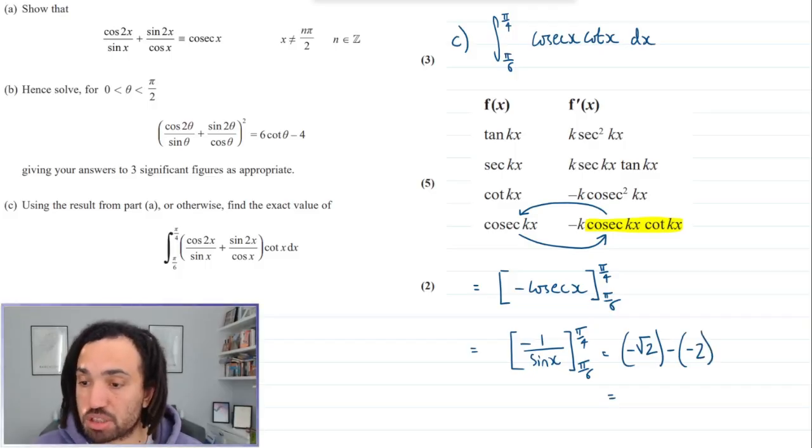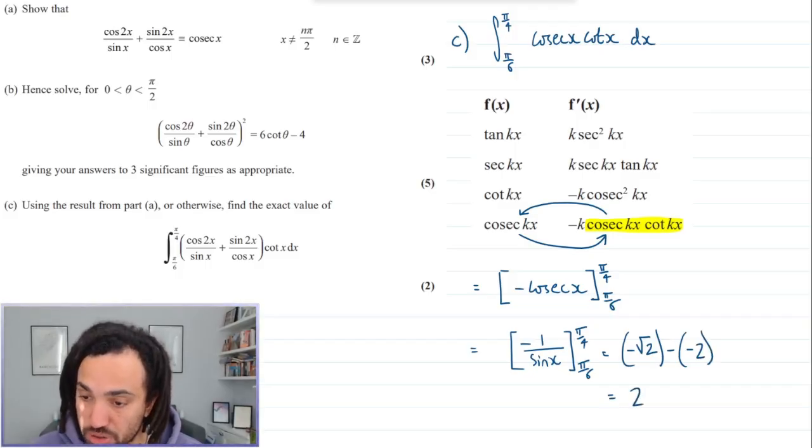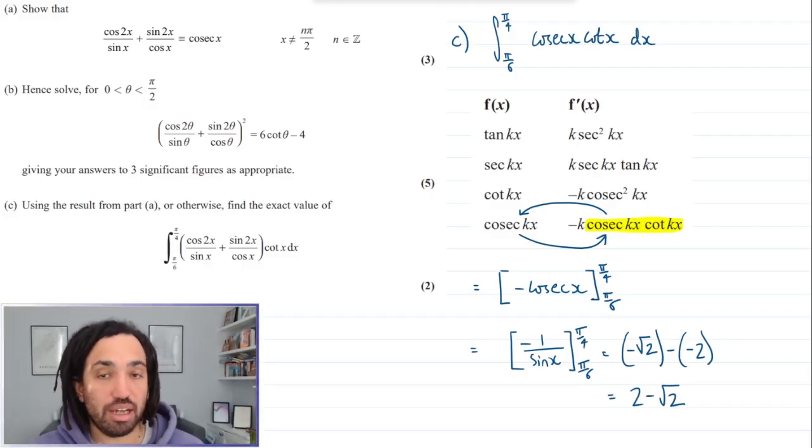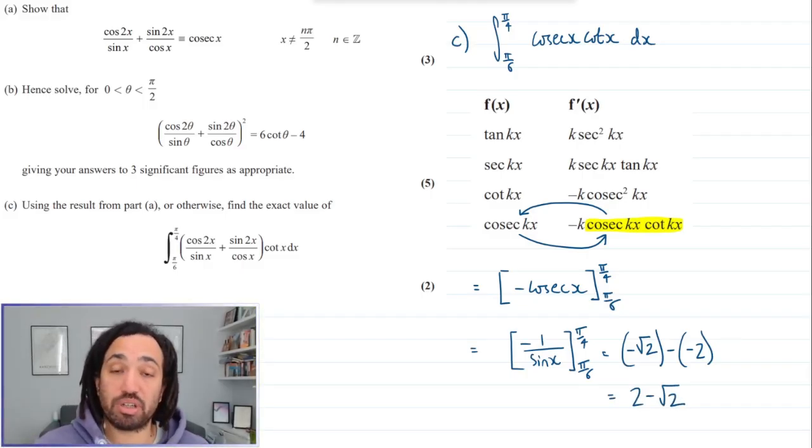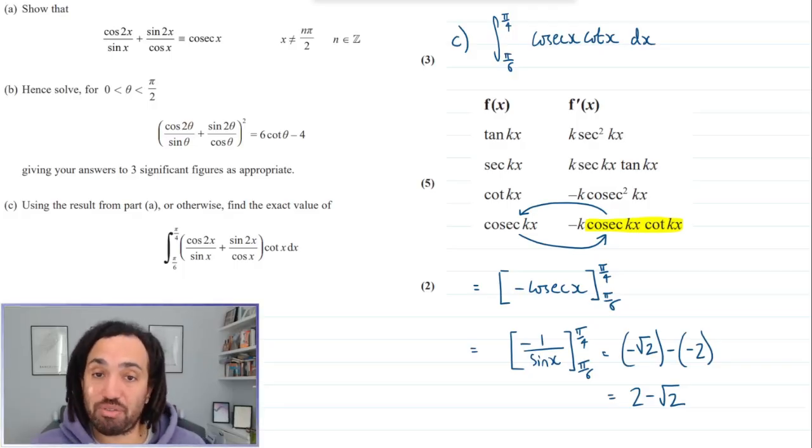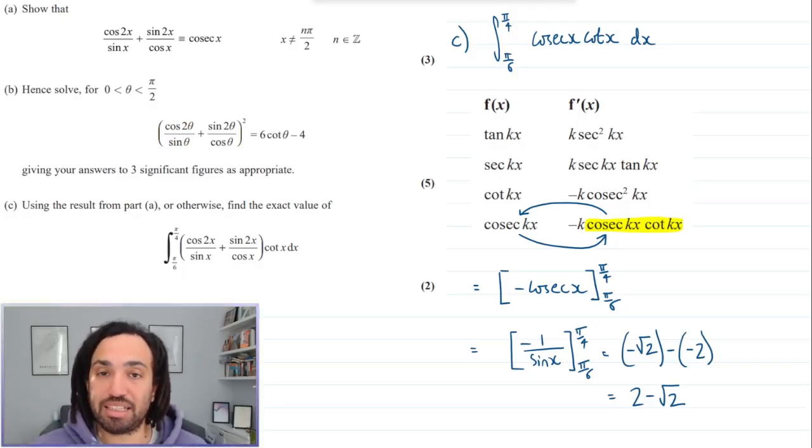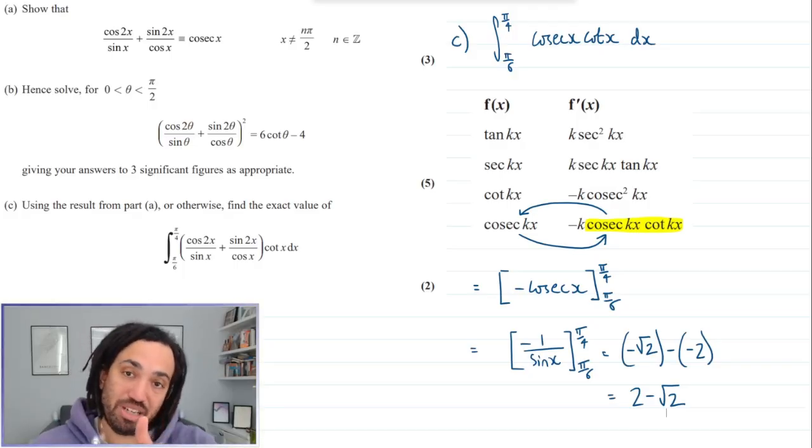So my final answer will be we have a positive 2 minus a root 2, and there we have it. Now I really hope you enjoyed that. If you did, check out my other A level math tricky questions and leave a thumbs up. Bye for now.